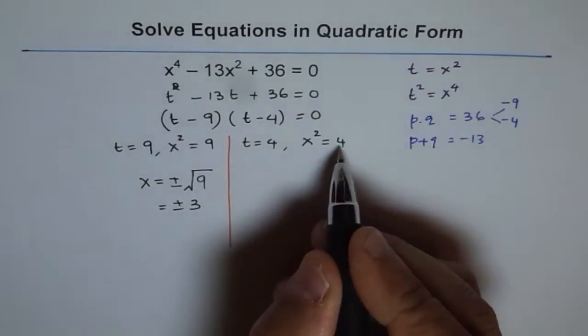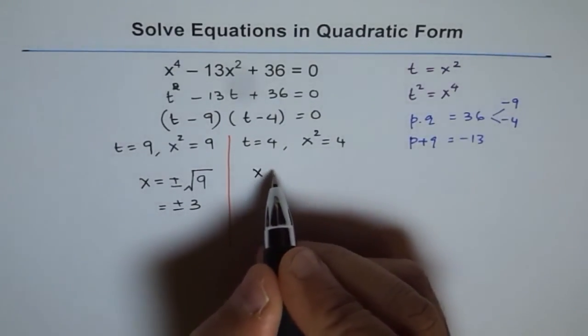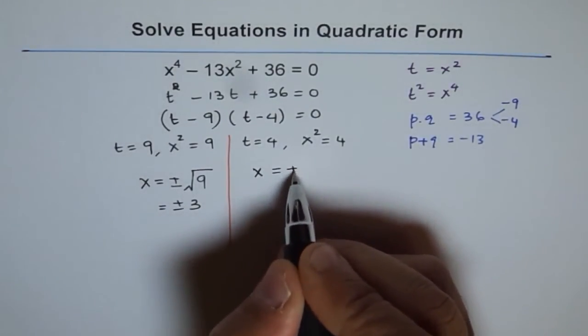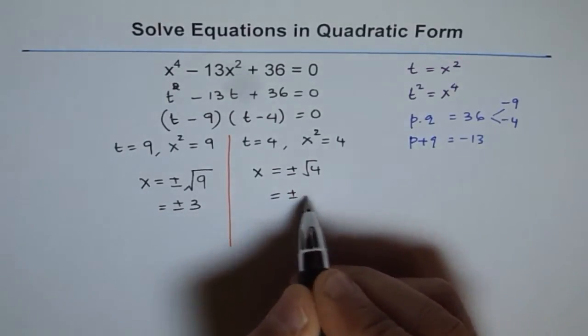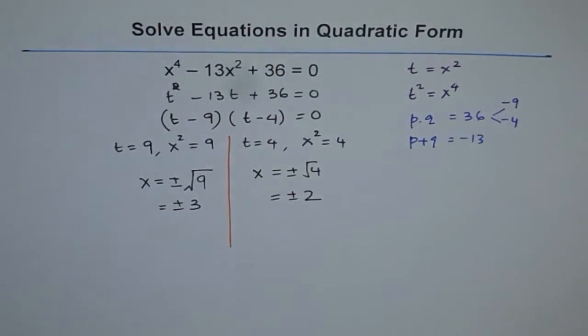On this side x squared equals 4. I can write this as x equals plus and minus square root of 4 which gives me two answers: plus and minus 2. So I got four sets of answers which is x could be plus 3, minus 3, plus 2 or minus 2.